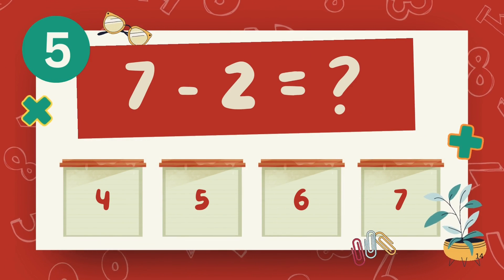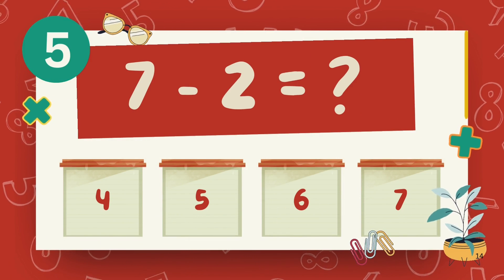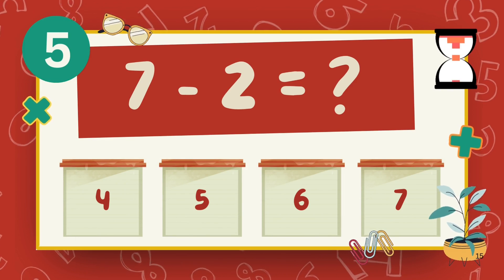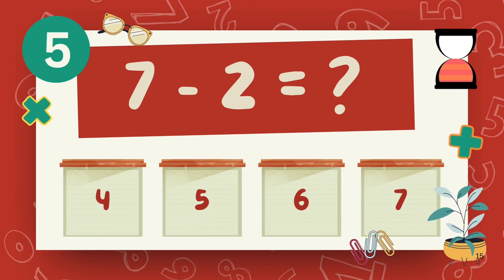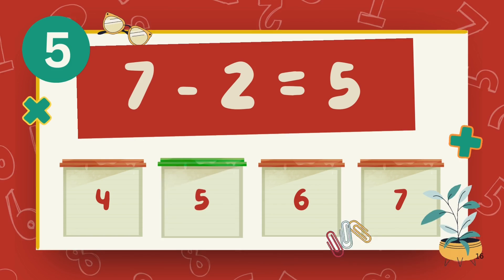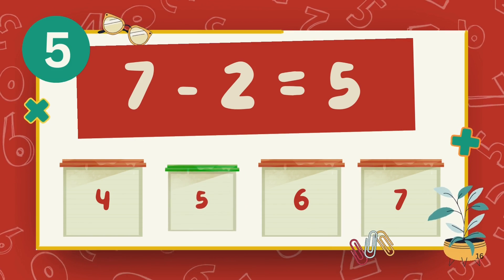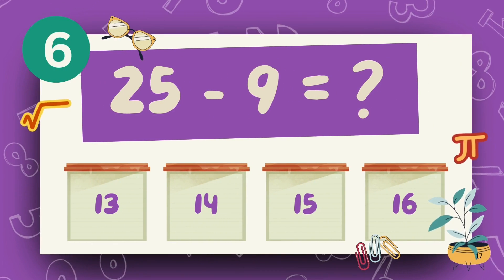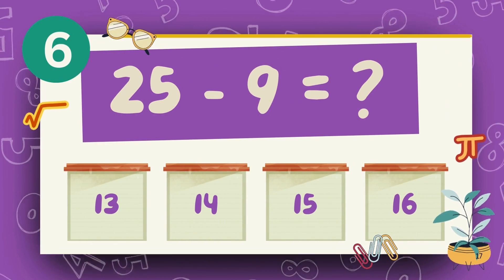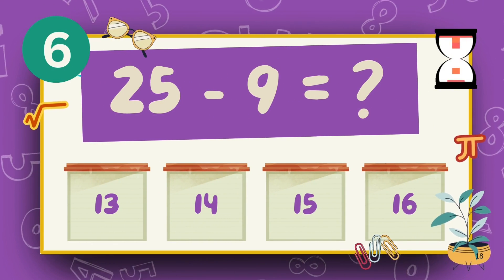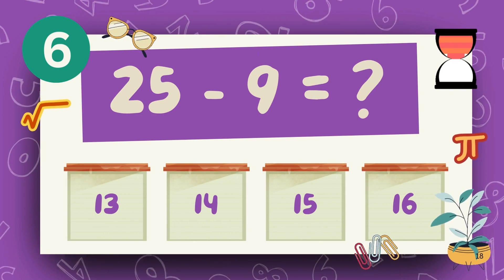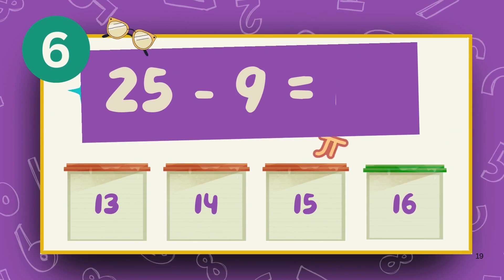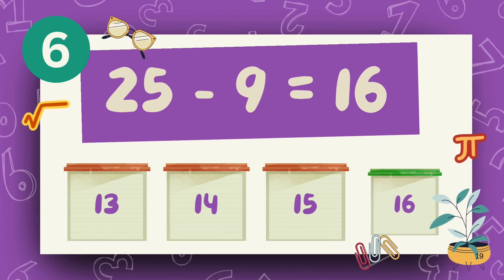What is 7 minus 2? The answer is 5. What is 25 minus 9? The answer is 16.